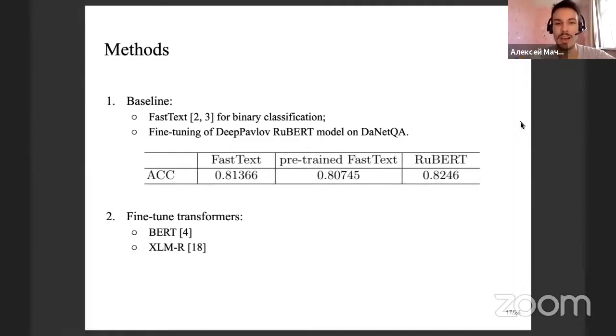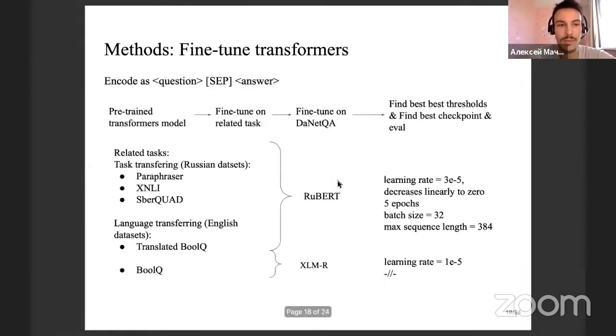First of all, we have three baselines: a pre-trained and not pre-trained fastText classifier, and also RuBERT fine-tuned, or DeepPavlov's RuBERT fine-tuned for our task. As expected, the best baseline is achieved by the RuBERT model. I will discuss our experiments on training models to achieve the best accuracy on our data set.